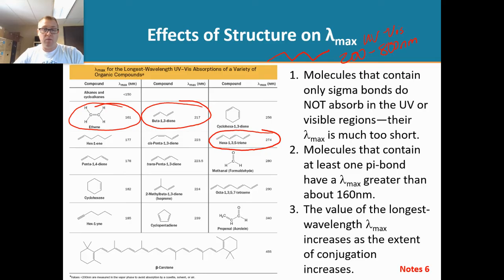And so what we're observing is as the amount of conjugation, so if we keep going, more double bonds that are conjugated, the lambda max gets larger. So that's key to remember, that the amount of double bonds, if they are conjugated, is going to increase the lambda max.